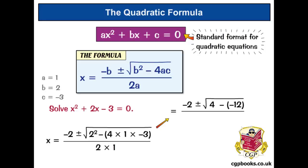So, we need to be really careful with those minus signs. Really, really careful, actually. And that's all over 2 times 1, which is 2. So, now in the square root sign, we've got 4 minus minus 12, so that's 4 plus 12, which is 16. And the square root of 16 is 4.